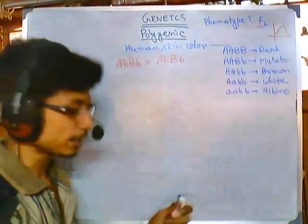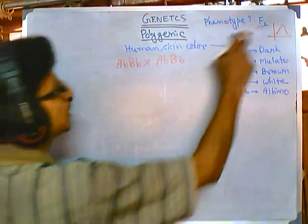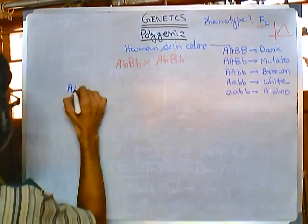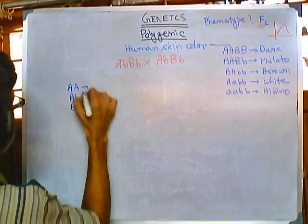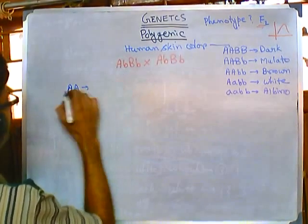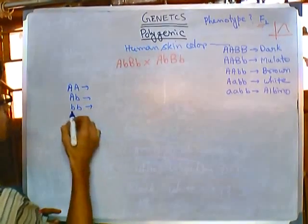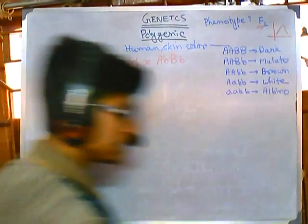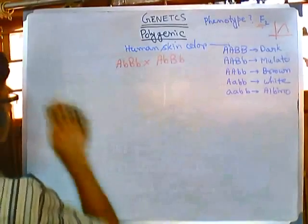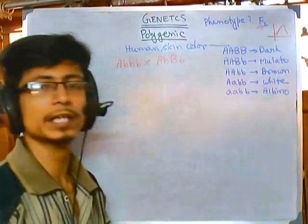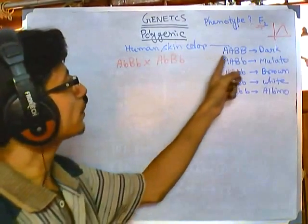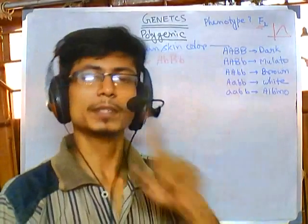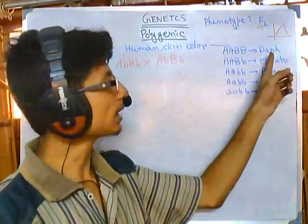We are having a cross between these individuals, and after the cross we are getting results. You need to find the F2 phenotypic ratio — that is the simple problem. Now, if we cross AAbb × aaBB, we get a specific genotype in F1. Remember, if we have four dominant genes that is one kind of phenotype — with four dominants you have a dark, black skin color.